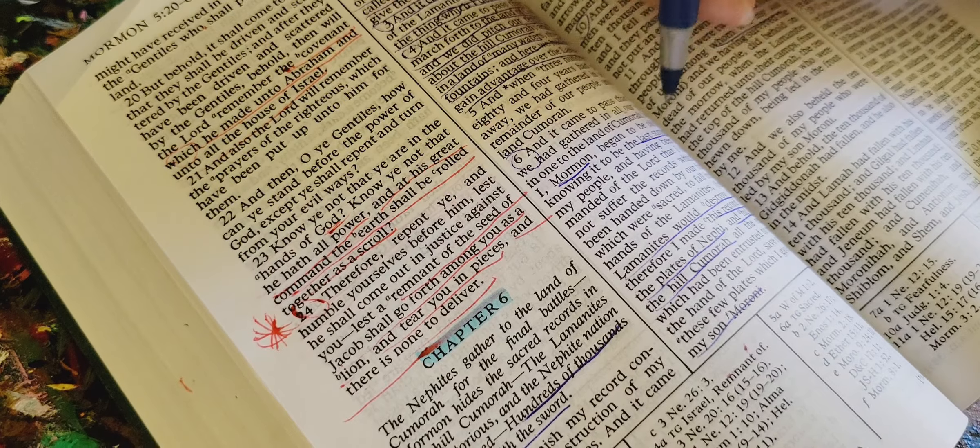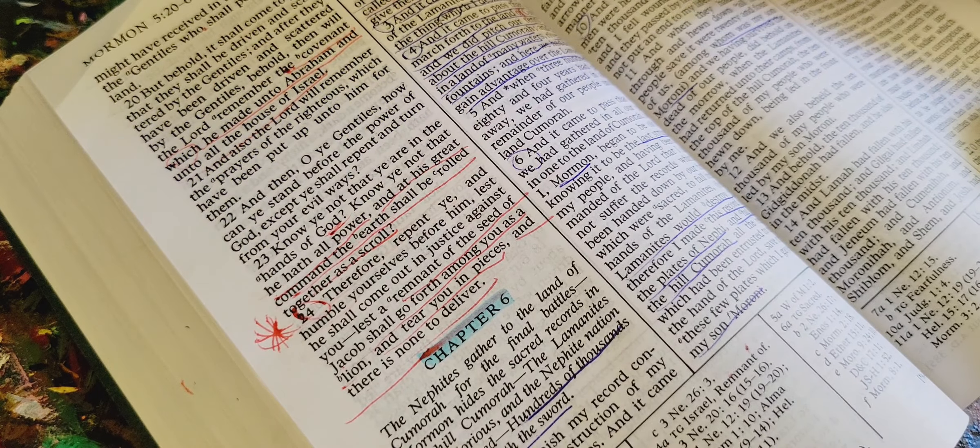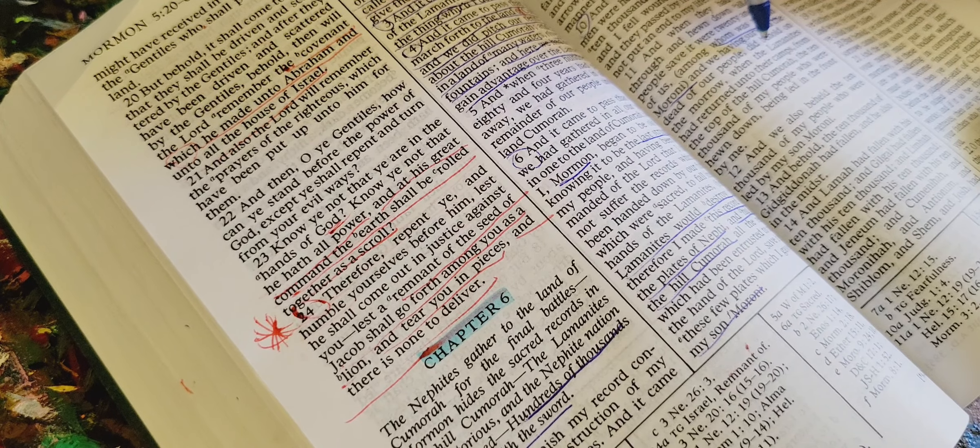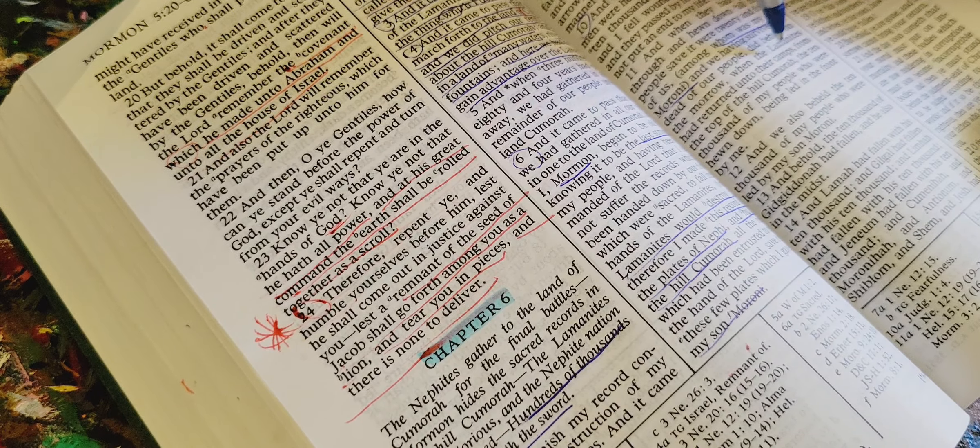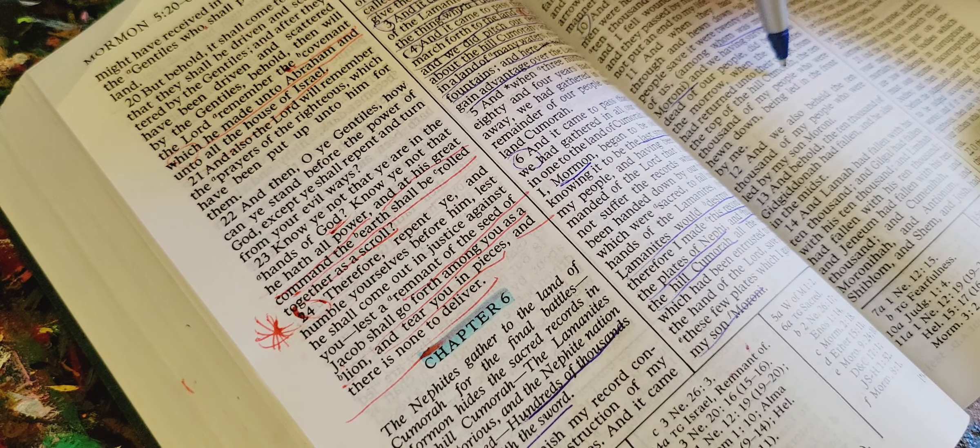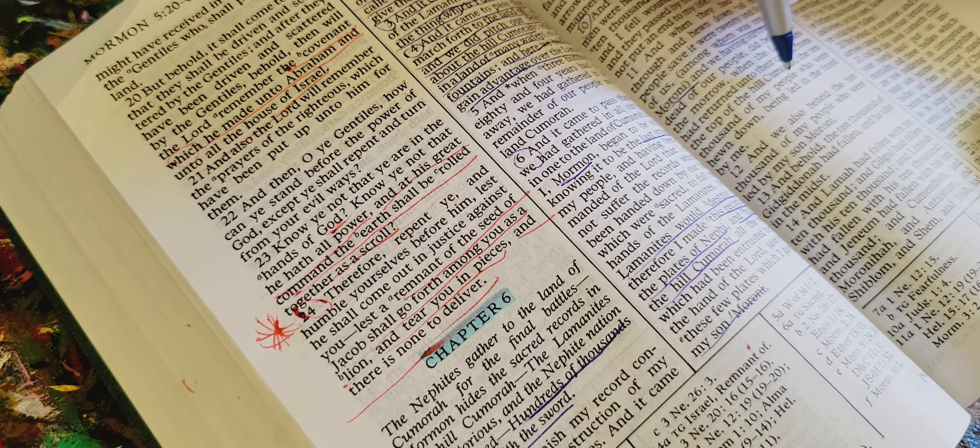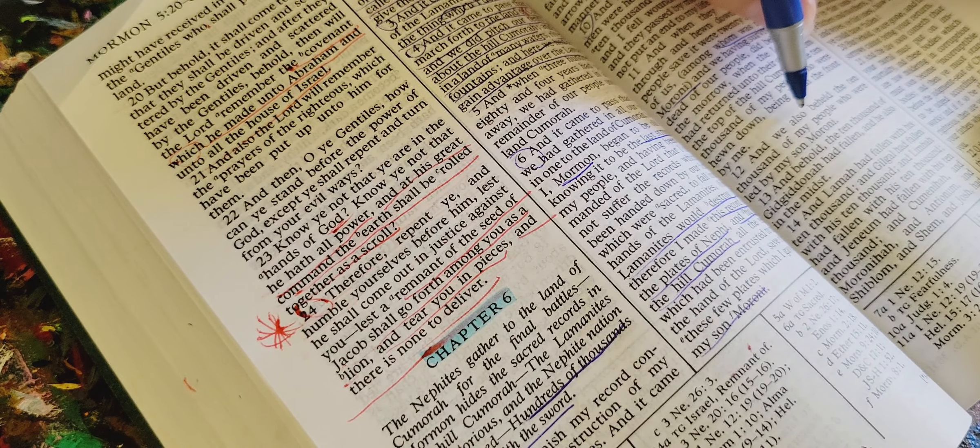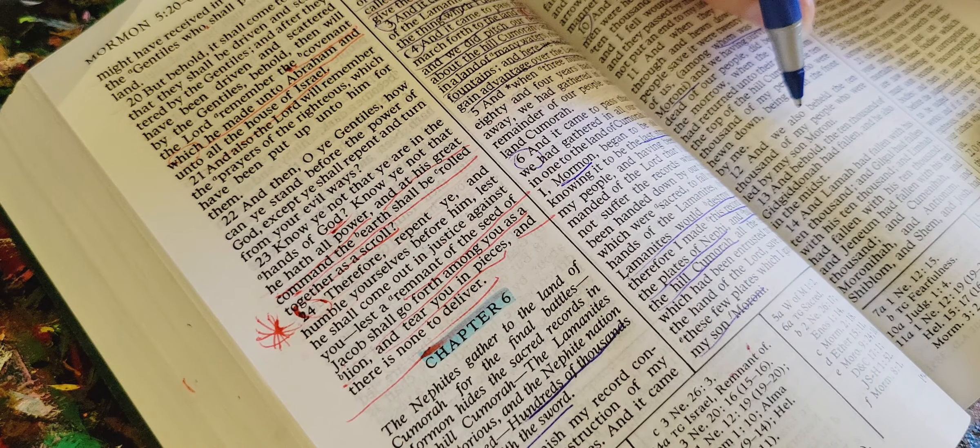And we, having survived the dead of our people, did behold on the morrow, when the Lamanites had returned unto their camp, on the top of the hill of Kumora, the ten thousand of my people, who were hewn down, being led in the front by me. And we also beheld the ten thousand of my people, who were led by my son Moroni.